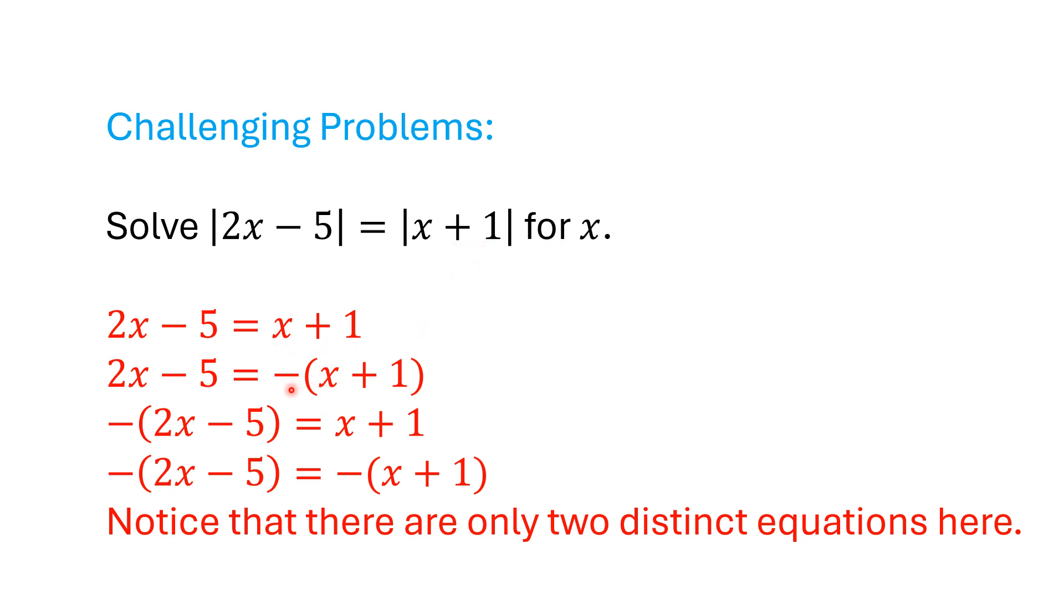So we're going to solve 2x - 5 positive equals x + 1, the positive version. Then we're going to let this one be the negative version. 2x - 5 = -(x + 1).